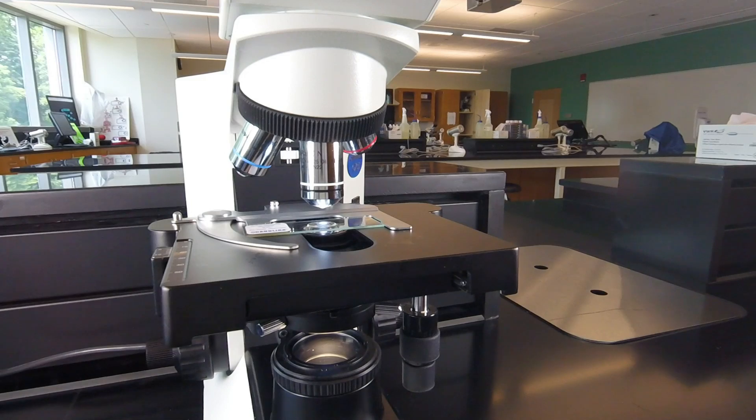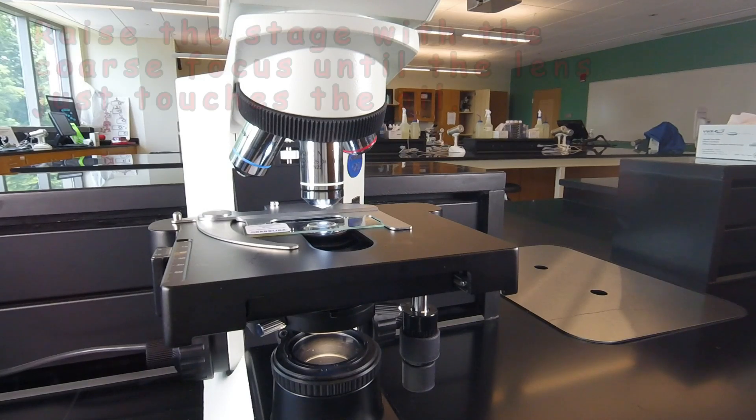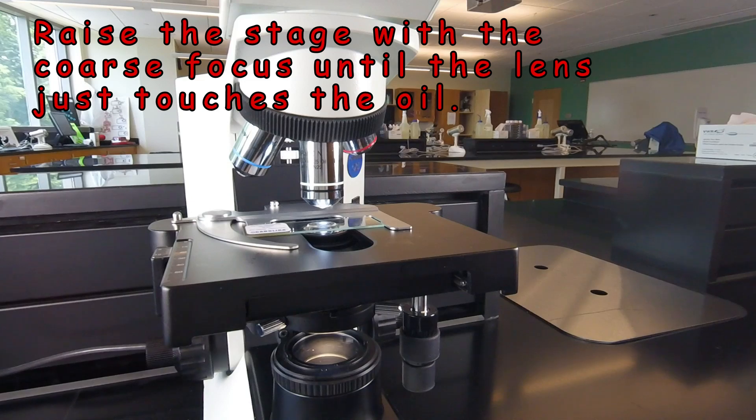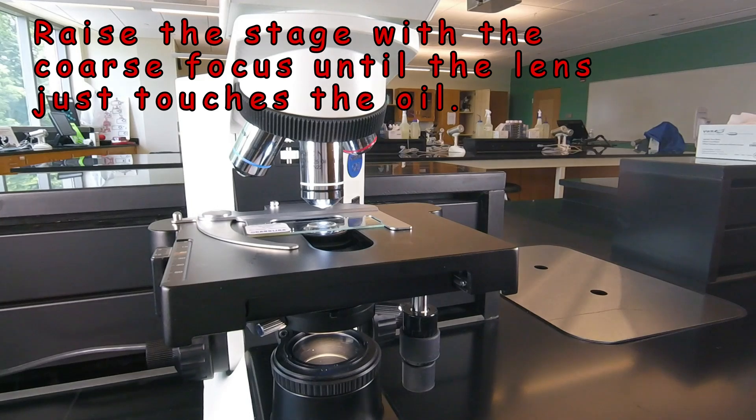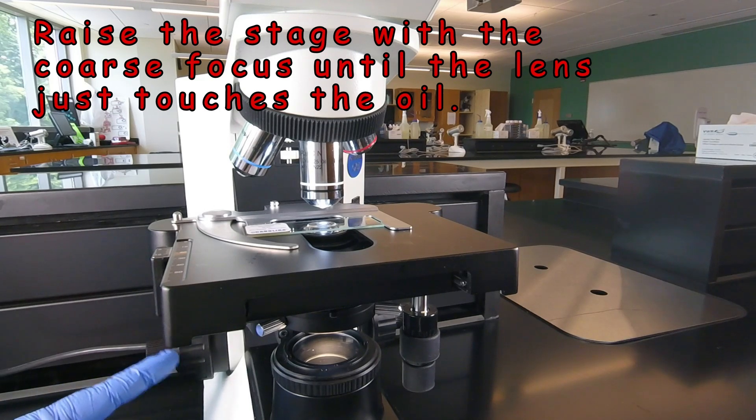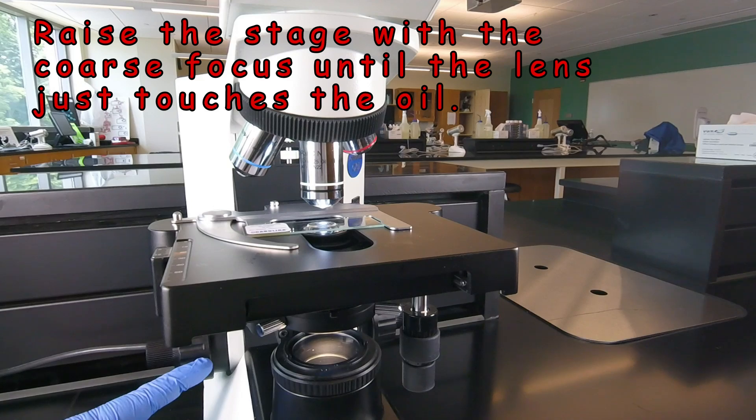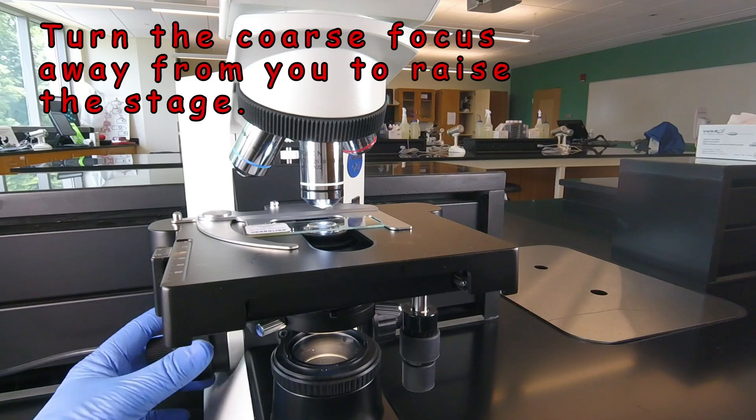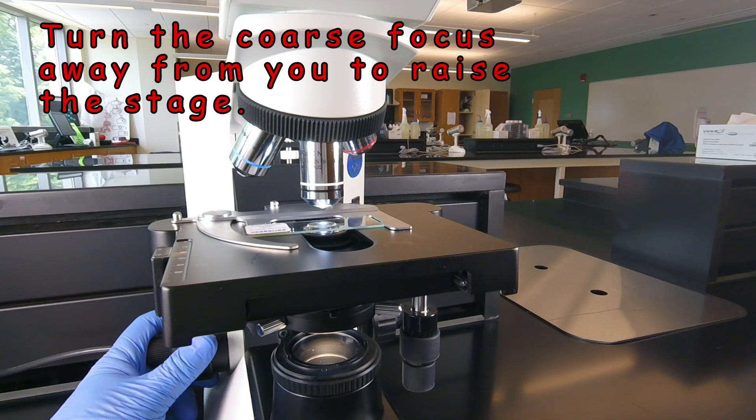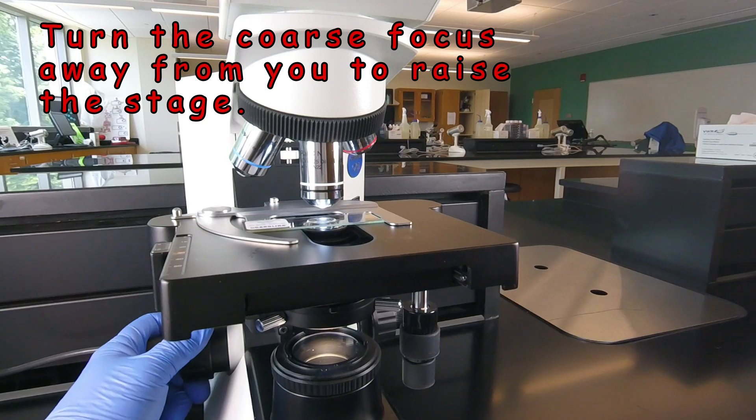At this point, we're ready for the most critical step when it comes to focusing with oil immersion microscopy. What we need to do is to raise the stage until the oil immersion objective just touches the oil on the slide, but no further than the point where it just touches. This is going to be done using the coarse focus of the microscope, the large knob on either side. We're going to take the coarse focus, slowly turning it away from you, which raises the stage.